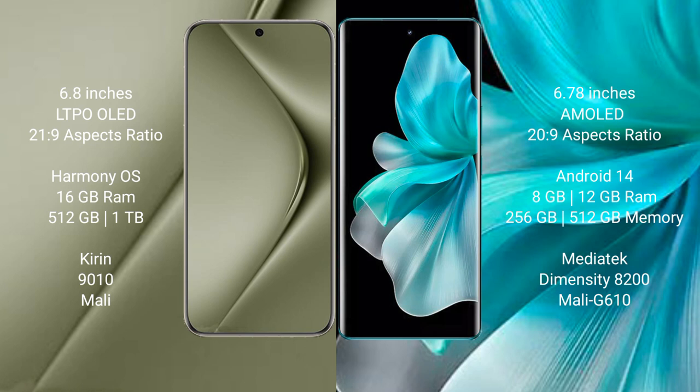Wahabepura 70 Ultra comes with 16GB RAM and 512GB or 1TB internal storage, with the Kirin 9010 processor and its GPU. Vio V30 Pro comes with 8GB or 12GB RAM and 256GB or 512GB internal storage, with the MediaTek Dimensity 8200 processor and Mali-G610 GPU.